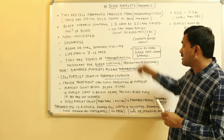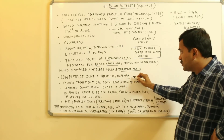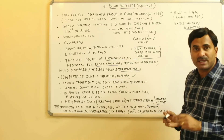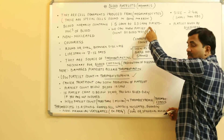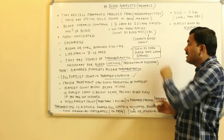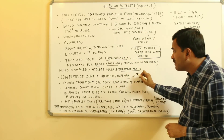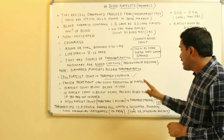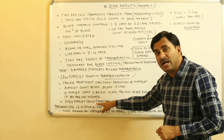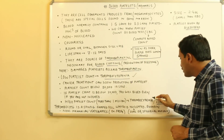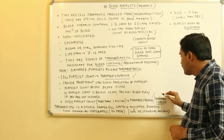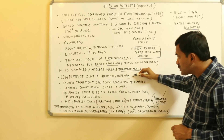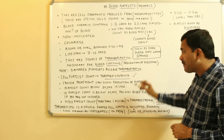Remember: low blood platelet count is called thrombocytopenia. This is the normal platelet count range. If the platelet count is high, it is called thrombocytemia or thrombocytosis. To summarize: low platelet count is thrombocytopenia, and high platelet count is thrombocytemia or thrombocytosis.